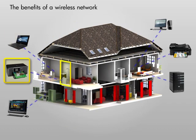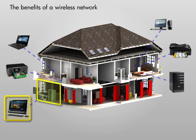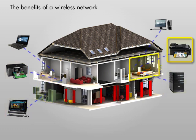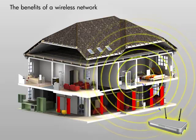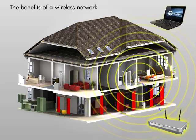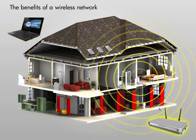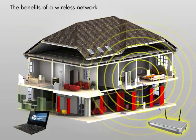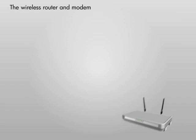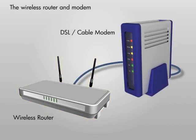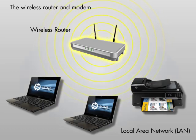A wireless network allows you to place a variety of wireless-enabled devices in convenient locations throughout your home without the expense and trouble of having to install Ethernet cable access in each location. Freedom from cables also allows you to move devices such as your laptop from room to room and remain connected to the network as long as you are within range of your wireless router's signal. The most essential elements of a wireless network are the wireless router and the modem.